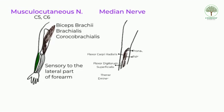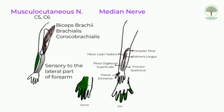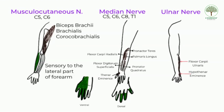The median nerve supplies the muscles in the anterior compartment of the forearm and the muscles of the thenar eminence to control hand movement. It is sensory to digits 1, 2, 3 and the medial half of digit 4 on the ventral surface, and on the dorsal side to digits 1, 2, 3 up to the second phalangeal joint. The median nerve is formed by a median root from the lateral cord and the medial cord, giving it root values C5, C6, C8, and T1. The ulnar nerve innervates the flexor carpi ulnaris in the forearm and the muscles of the hypothenar eminence.